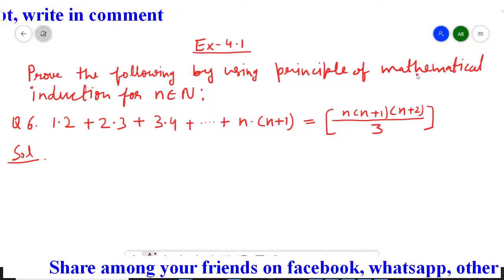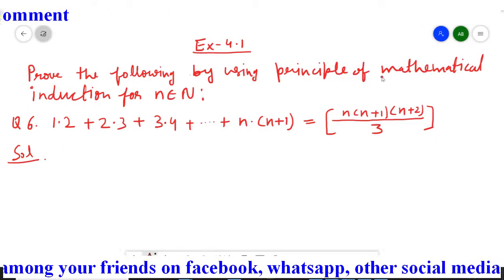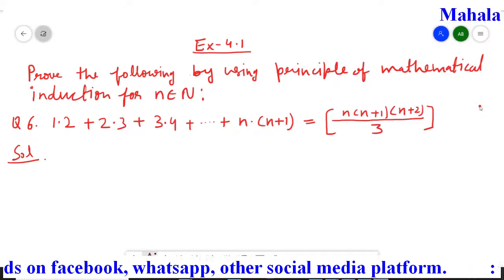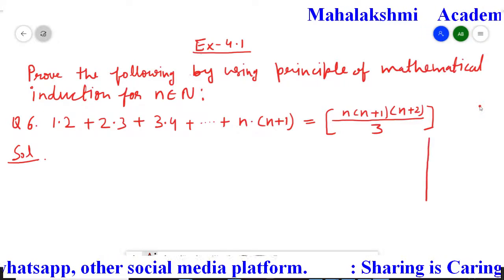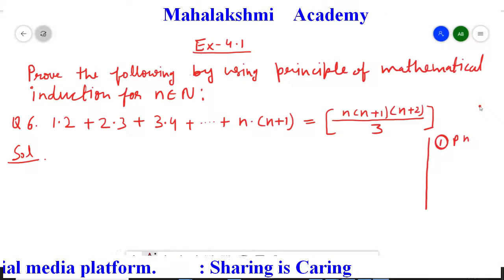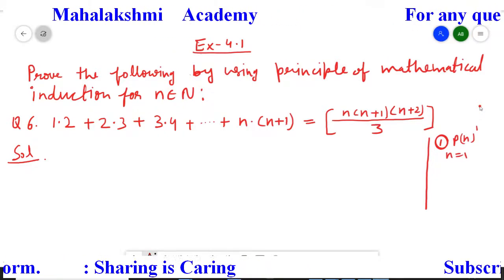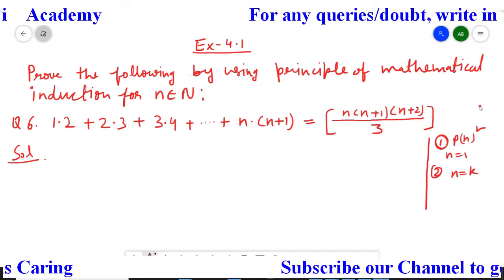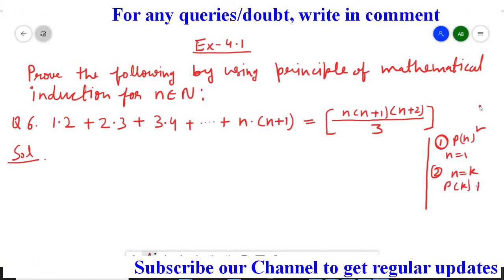First, the principle of mathematical induction mainly has three steps. The first step is we have to assume the given statement as P(n). Then we have to prove that for n equal to 1, P(n) is true. The second step is for n equal to k, we have to assume that the P(k) statement is true.